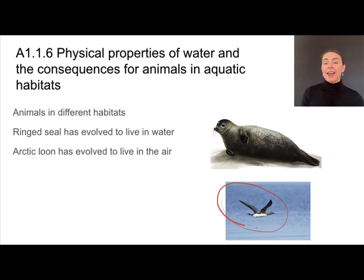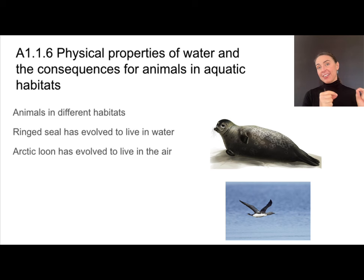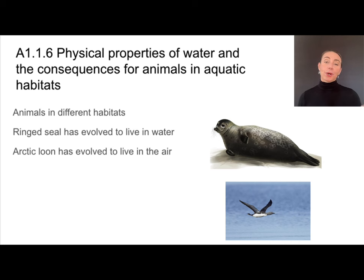In contrast, the Arctic loon has evolved to live in the air. Air is less buoyant than water, so the loon has to expend a lot of energy to stay in the air. But air is less viscous than water, so it doesn't take as much energy to move through it. Air is also not as great a thermal conductor, so we find less blubber on that bird. These are great examples of the ways organisms have different adaptations to deal with the pros and cons of the physical properties of water.